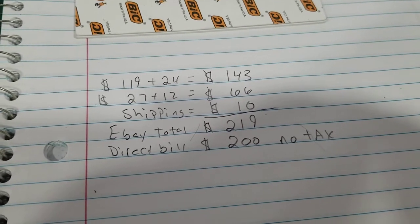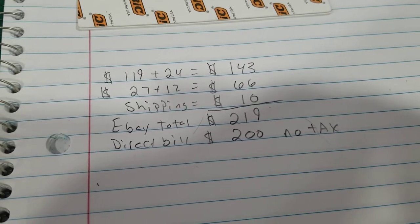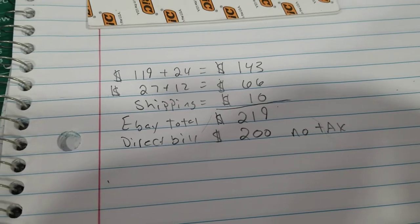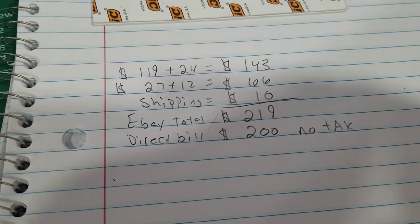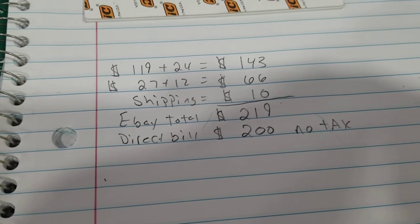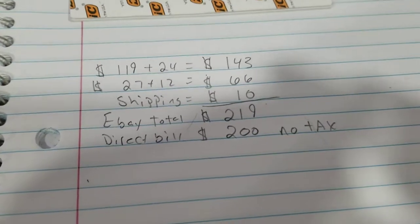You can let me know and I can create a listing on eBay. It will be $219 total. Or if you want a direct bill from me, I can look at my email in the title and description and send me an email and I'll bill you directly. And it will be $200 and no tax. Just let me know which way you want to go.